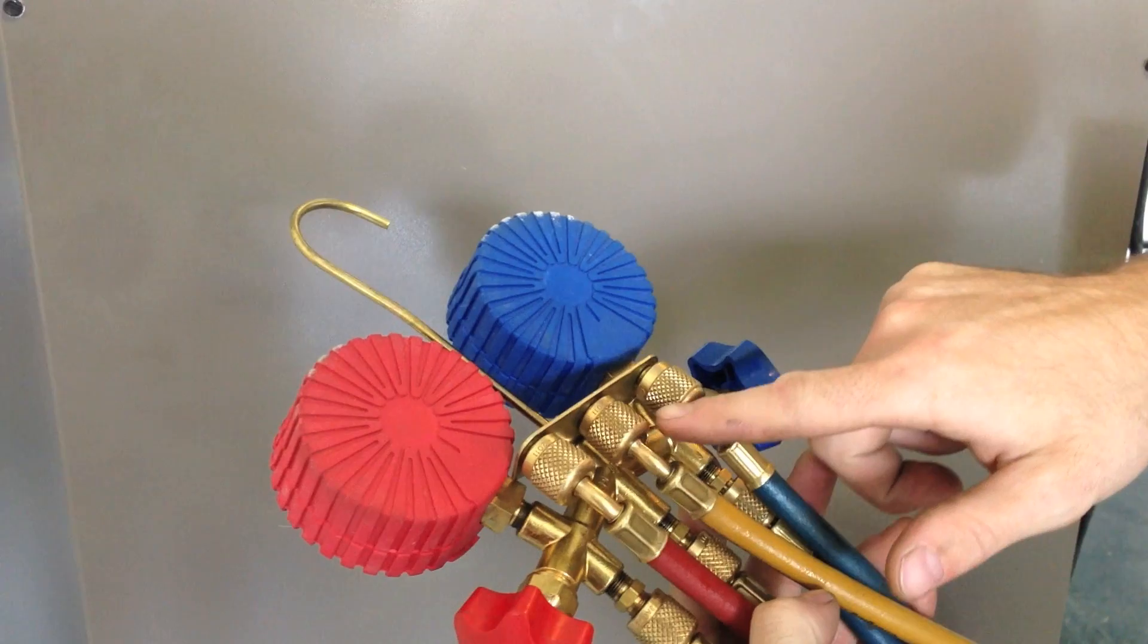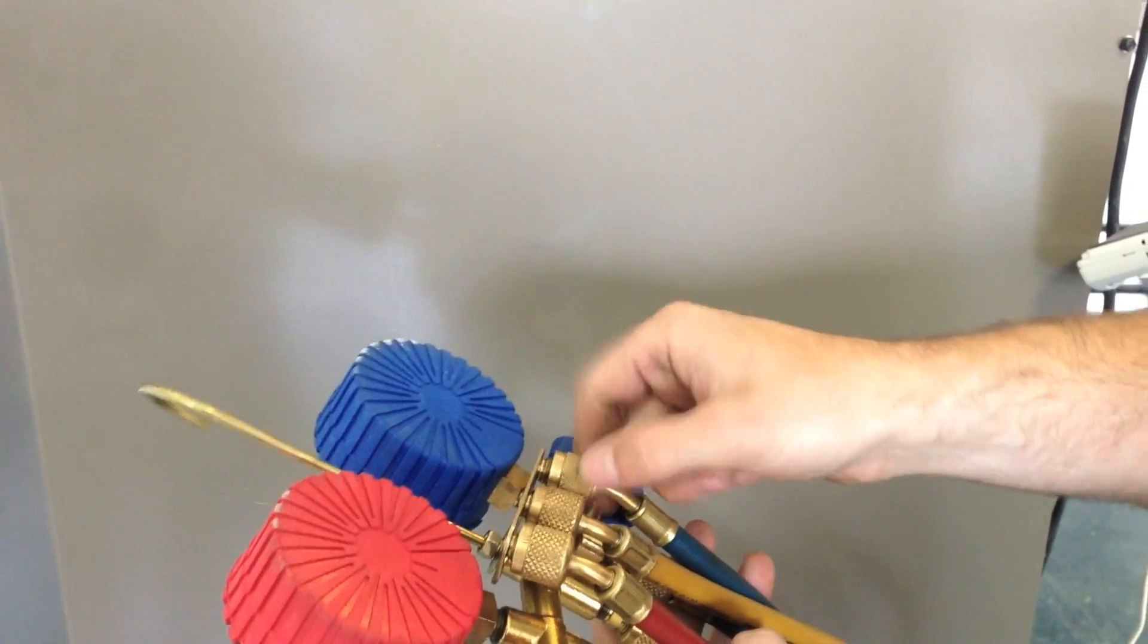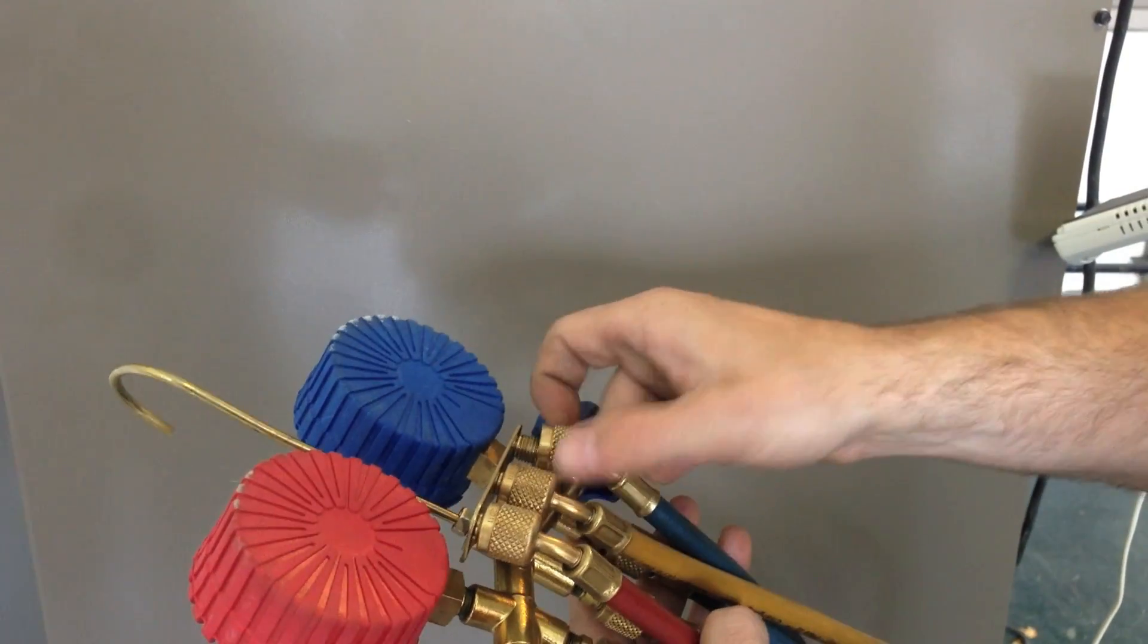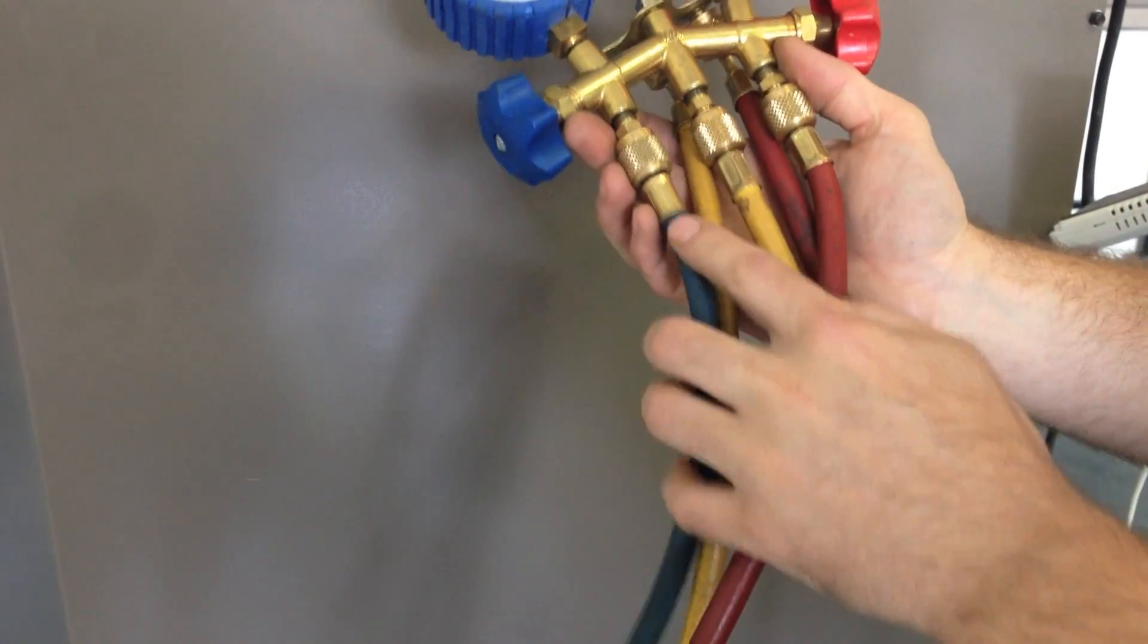At the back is our dummy posts. We're going to unscrew only our blue hose. We're going to leave it attached at the front.